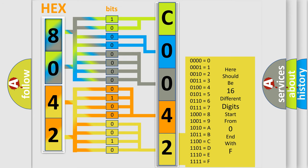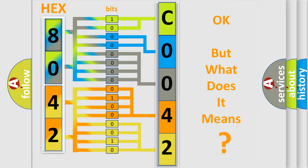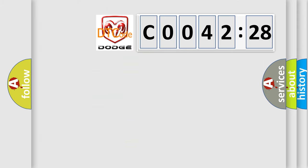We now know in what way the diagnostic tool translates the received information into a more comprehensible format. The number itself does not make sense to us if we cannot assign information about what it actually expresses. So, what does the diagnostic trouble code C0042/28 interpret specifically for Dodge car manufacturers?